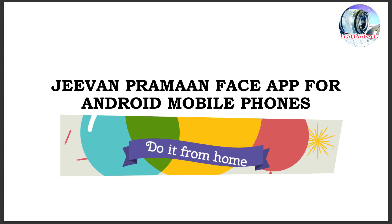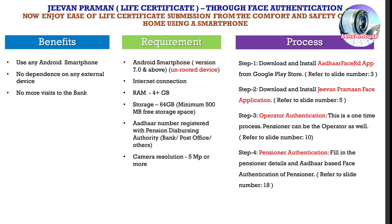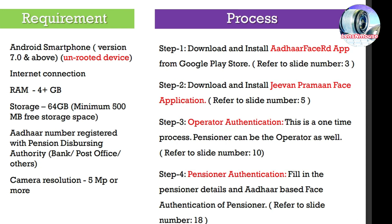Today I explain how to generate a digital life certificate using the Jeevan Praman mobile application. It has only 4 steps: Step 1, download and install Aadar FaceRD app from Google Play Store. Step 2, download and install Jeevan Praman Face application. Step 3, operator authentication — this is a one-time process; the pensioner can be the operator as well. Step 4, pensioner authentication — fill in the pensioner details and Aadar-based face authentication of the pensioner.